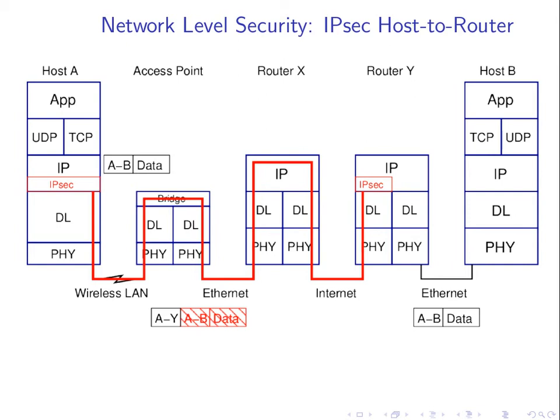How does IP sec know to send to router Y? Because it was configured — there must be some configuration of IP sec specifying that the other endpoint is router Y. IP sec puts the original IP datagram inside another one, creating a tunneled datagram. The inner one is encrypted, which provides protection of the data. IP sec not only attaches that extra header but encrypts everything inside.